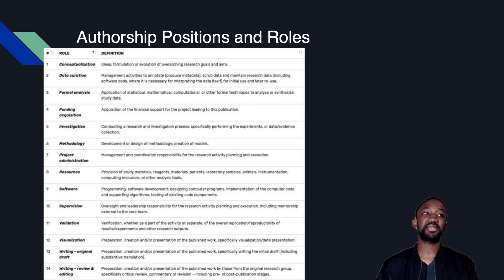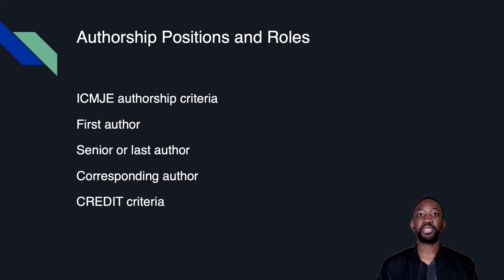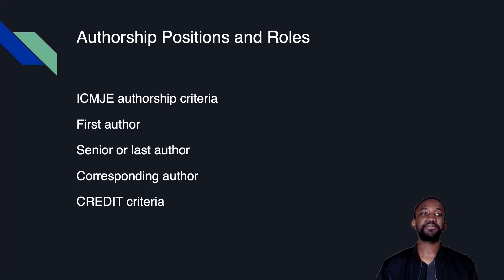One way to ensure transparency is to work on a collaborative platform that records contributions — my favorite is Google Drive, using Google Docs, Sheets, or Forms, because you get historical tracking of what everyone has done. I also recommend having a spreadsheet to track everybody's roles and using a points-based system to tally the CRediT roles and determine who should be first, second, or third author. Last authorship is usually less contentious as it typically reflects seniority.